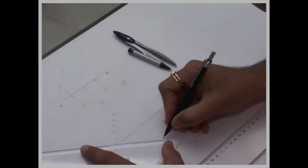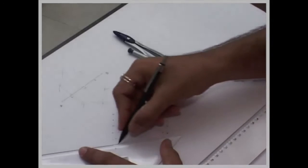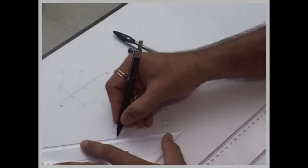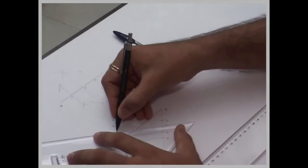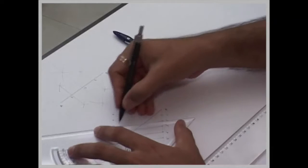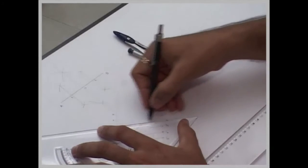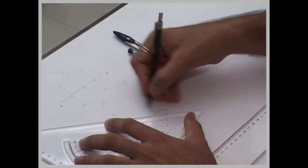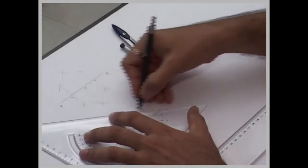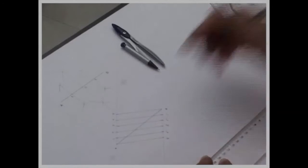Now join A to five dash, one to four dash, two to three dash, three to two dash, four to one dash, and five to B. So we have divided line AB into five equal parts.